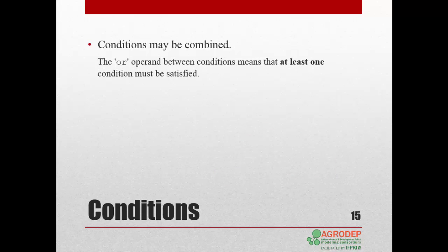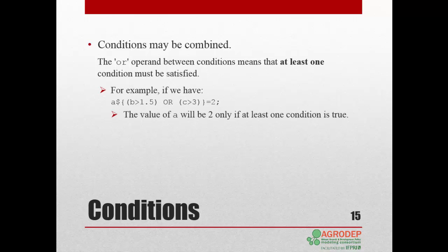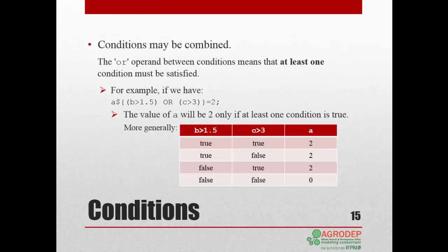Using the OR operand between conditions, this means that at least one condition must be satisfied. For example, in this expression, at least one condition must be true — either B must be greater than 1.5, or C greater than 3, or both — for A to be equal to 2. More generally, we can build a conditional table showing all the possible combinations. Only when both conditions are false does A take the value 0.